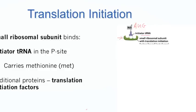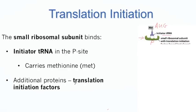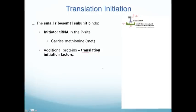Interestingly, during initiation the methionine initially binds to what will become the P site of the ribosome — not the A site. Along with the initiator tRNA and the small ribosomal subunit, there are many proteins called translation initiation factors that aid in starting the process of translation. Step one is the initiator tRNA, the small ribosomal subunit, and the translation initiation factors come together in a complex. At this point there is no mRNA yet.